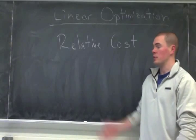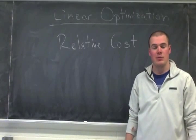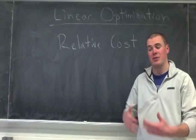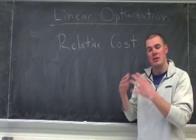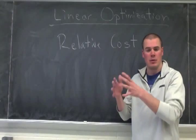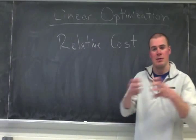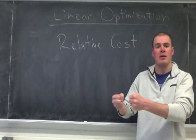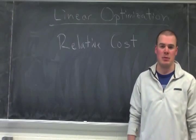Welcome again to linear optimization. We're going to talk about relative cost. Relative cost is essentially a measure of the cost to take something that's not in my basis, one of my column vectors, and to put it in the basis. So how much does it cost to increase that variable.